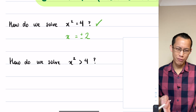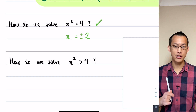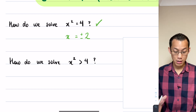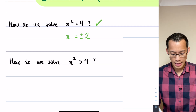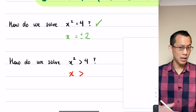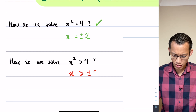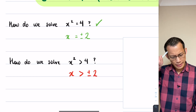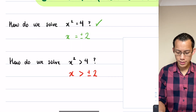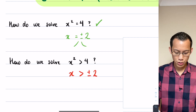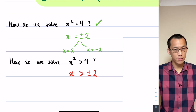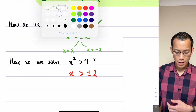Imagine if we tried to treat this inequality the way we treated the equation above. If I say: I've got x squared but I just want x, so I'll take square roots of both sides — that leaves x on the left, a greater-than symbol instead of an equals sign, and then plus or minus two on the right. This is weird — and it's also wrong.